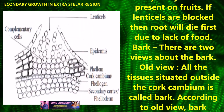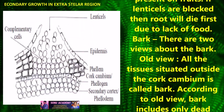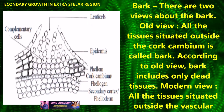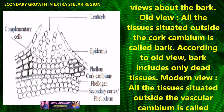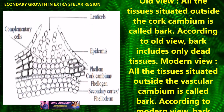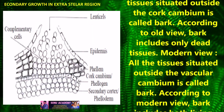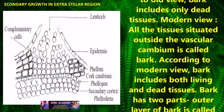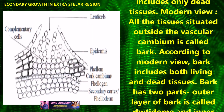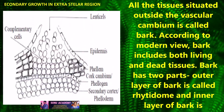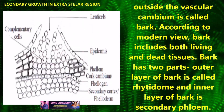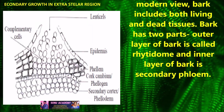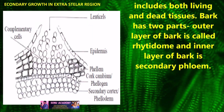Bark: There are two views about bark. Old view: All the tissues situated outside the cork cambium are called bark. According to the old view, bark includes only dead tissues. Modern view: All the tissues situated outside the vascular cambium are called bark. According to the modern view, bark includes both living and dead tissues.